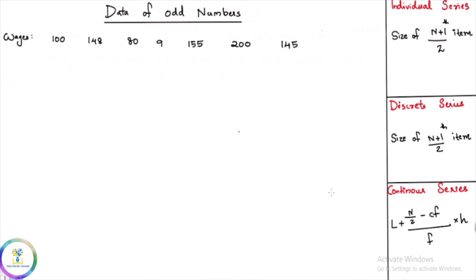So we are going to do the individual series. In the individual series, the median is the size of the (n+1)/2 th item. The number of items gives the size of the (n+1)/2 th item. In the discrete series, it is also the size of the (n+1)/2 th item. For the continuous series, the equation is: L plus (n/2 minus cf) divided by f, into h.